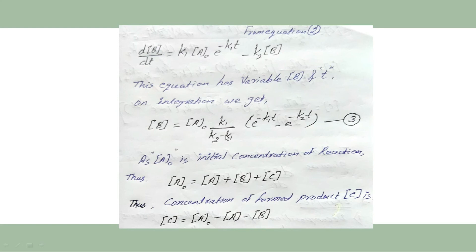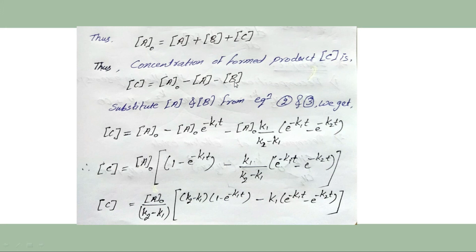As the initial concentration A₀ is distributed among A, B, and C during the process, by the law of conservation of mass: A₀ = [A] + [B] + [C]. Therefore, [C] = A₀ − [A] − [B]. Substituting the values of [A] from equation 2 and [B] from equation 3, we can calculate the molar concentration of C.